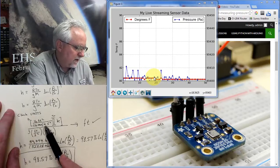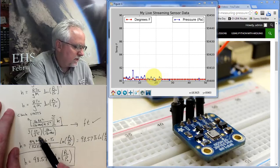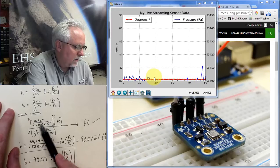This second squared cancels that second squared. So I end up with foot squared over foot.